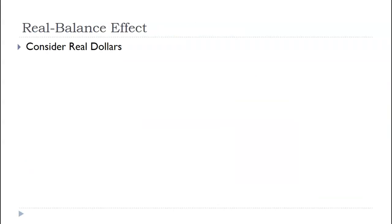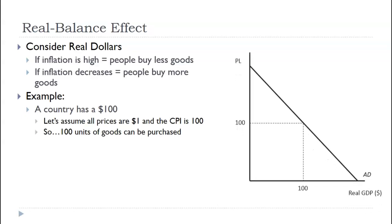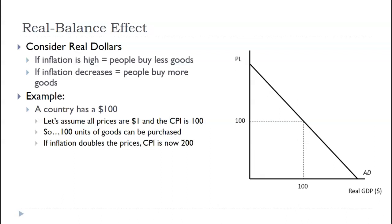First one, let's consider the real dollars. Meaning, if inflation is high, people, their money doesn't go as far. So, they're going to buy less, and if the price level goes down, they can buy more. What's my example? Let's say a country has $100 of national incomes. Their GDP is $100. They can buy $100 worth of goods. So, let's assume all prices are $1, CPI is $100, so that they can buy 100 units. Well, if inflation doubles, and the CPI is now $200, well, now, mathematically, they can't buy as many things. They can only buy 50 units. Why? Their GDP, the amount of goods and services purchased in that year, is still $100.